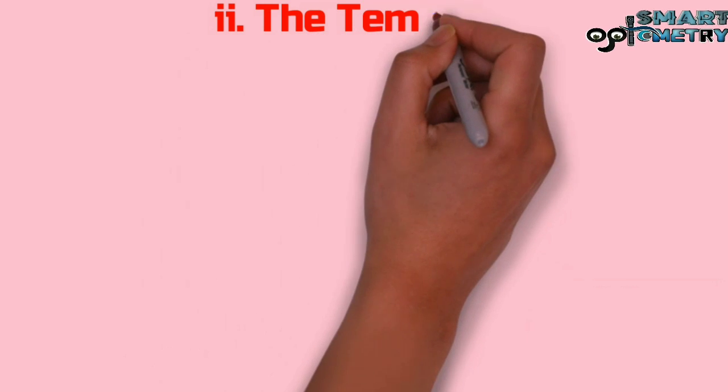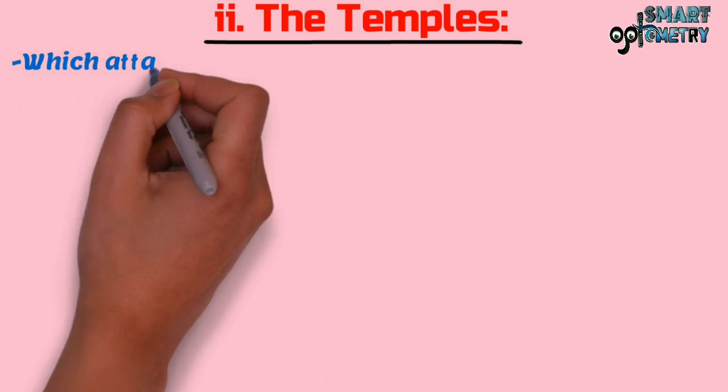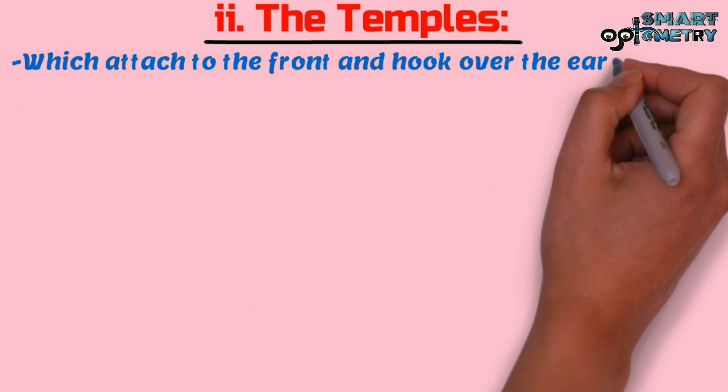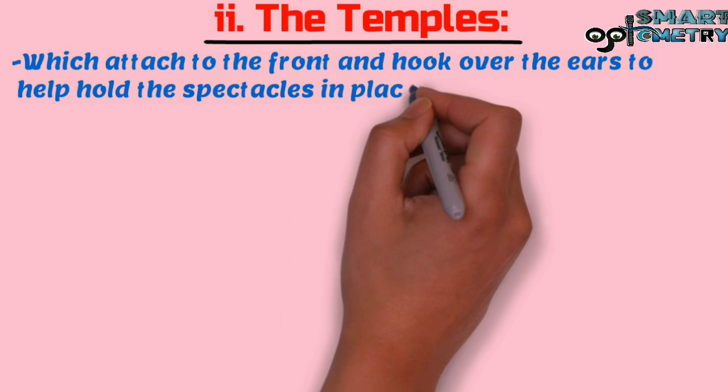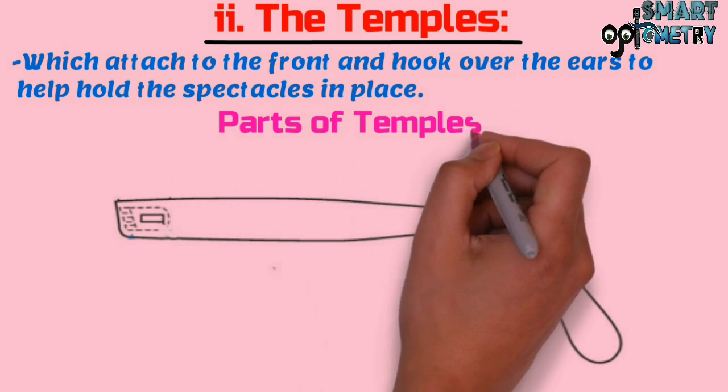Now let's discuss the temples of the frame. The temples of the frame is that part of the frame which attaches to the front and hooks over the ears to help hold the spectacles in place. Now what are the parts of the temples?